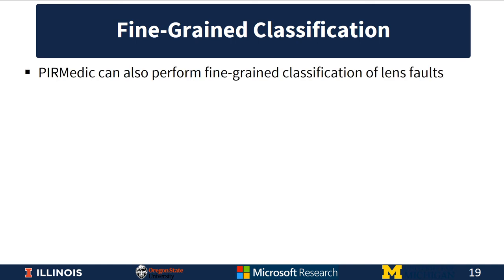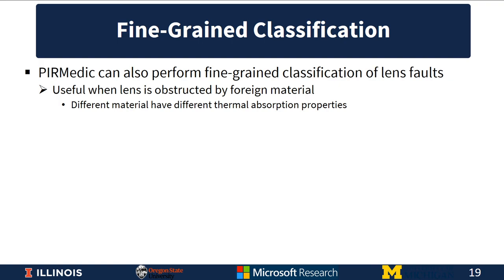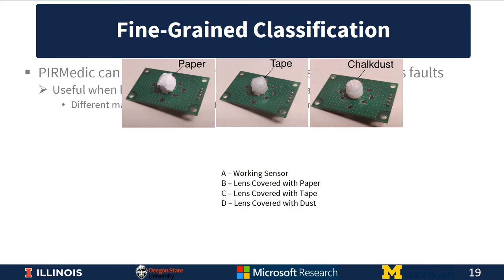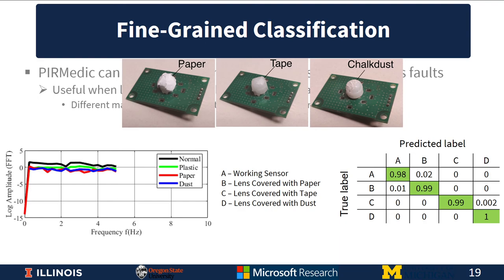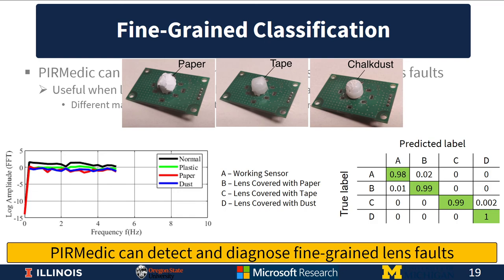PAR Medic can also perform fine-grained classification of lens faults, useful when a lens is obstructed by different foreign materials each with different thermal absorption properties. We consider sensors with lens covered with paper, some with tape, and some with dust. Plotting the frequency spectrum of the analog output shows a deviation between the frequency responses caused by each obstruction. The PAR Medic framework predicts the label of the sensor to a high degree of accuracy and is able to distinguish between each of these causes of lens faults.